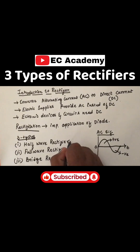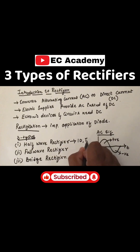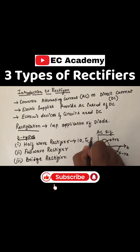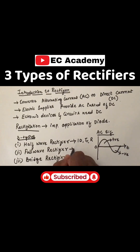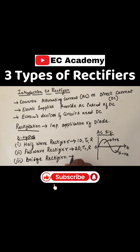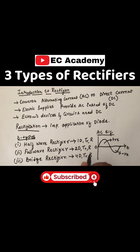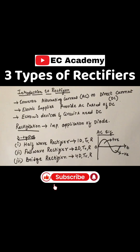Half wave rectifier circuit consists of one diode, a transformer, and a resistor. Full wave rectifier consists of two diodes, one transformer, and a resistor. Bridge rectifier consists of four diodes, a transformer, and a resistor. In all the circuits, the resistor is used as a load.